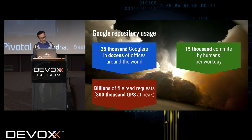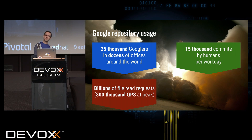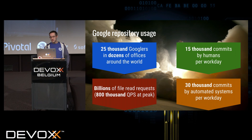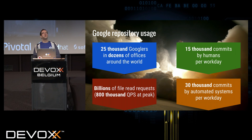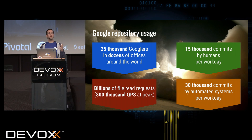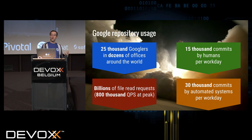There are 50,000 commits by humans per workday. We also have robots who are actually committing code — 30,000 commits by automated systems — because we've got tons of tools which are handling the code base, tools which are able to do refactorings. It's interesting to see that only a third of the commits are actually made by humans.